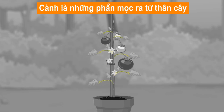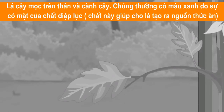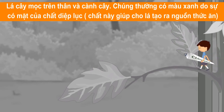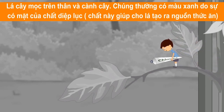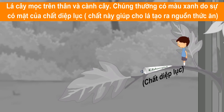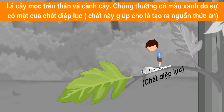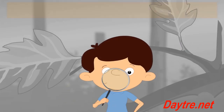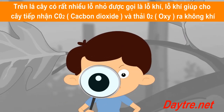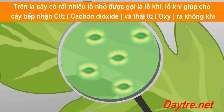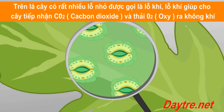Branches are parts that grow from the stem. Leaves grow on the stem and branches. They are usually green due to the presence of chlorophyll, which helps them to prepare food.